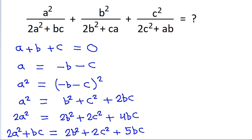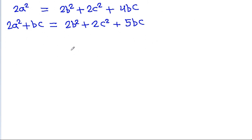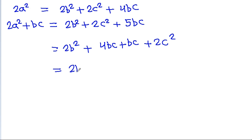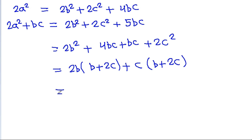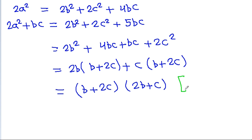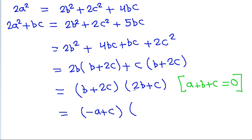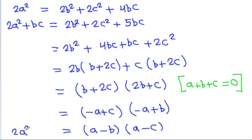This is 2b² + 4bc + bc + 2c², which factors as (b + 2c)(2b + c). Since a plus b plus c equals 0, b plus c equals minus a, so (b + 2c) = (a + c) and (2b + c) = (a + b) with appropriate signs, giving 2a² + bc = (a - b)(a - c).